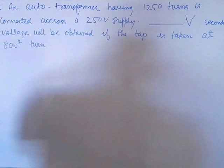An autotransformer having 1250 turns is connected across a 250 volt supply. The transformer has 1250 turns connected with primary 250 volt supply. The secondary voltage will be obtained if the tap is taken at 800 turns.